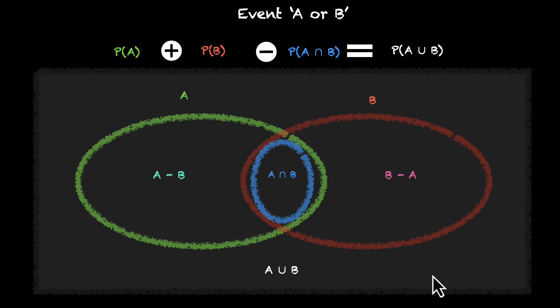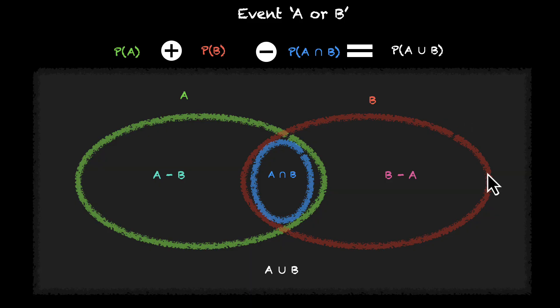So now we are ready to use our axioms to prove this result. We want to find A union B and we can write this as A union B minus A. We can have the green zone plus this B minus A zone and both of them are mutually exclusive. There is nothing in common because B minus A sits outside the green zone.